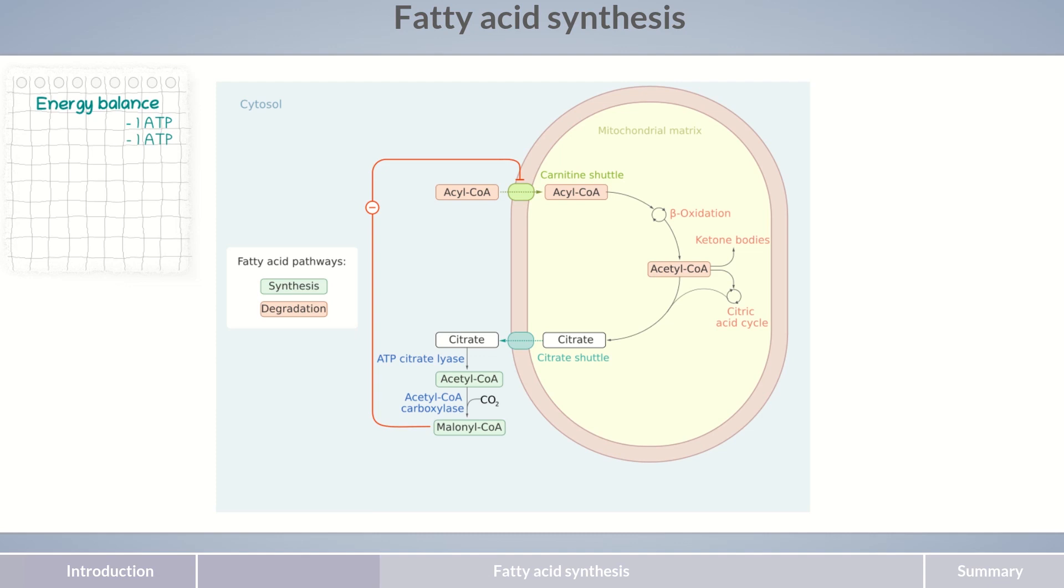Second, the formation of malonyl-CoA by acetyl-CoA carboxylase is the rate-limiting step in fatty acid synthesis. The enzyme is subject to hormonal and allosteric regulation. Glucagon, epinephrine and carbohydrate deficiency or increased physical activity, and palmitoyl-CoA as an indicator of an adequate supply of free fatty acids inhibit acetyl-CoA carboxylase. Yet citrate indicates an excess of energy and therefore acts as an activator.